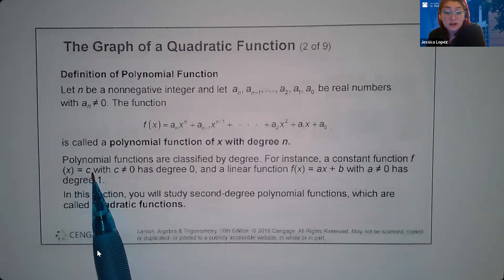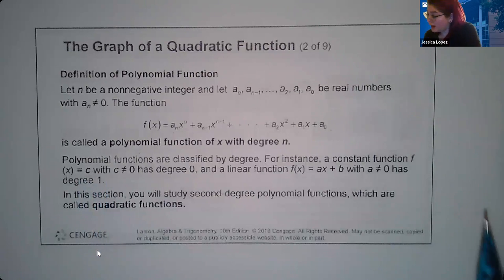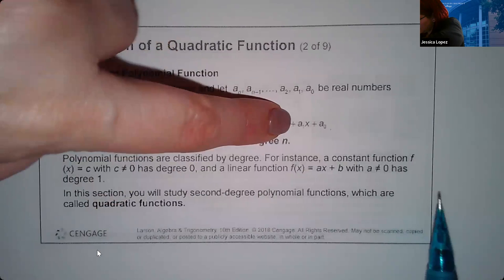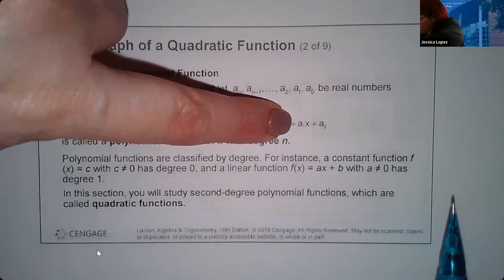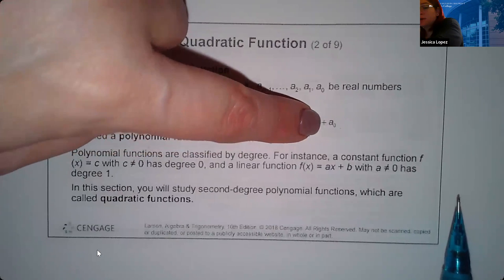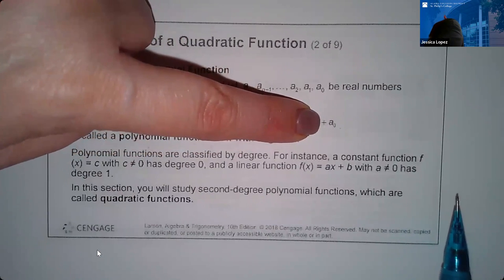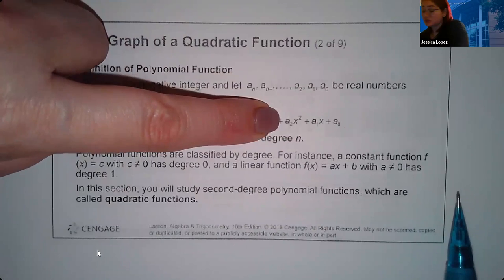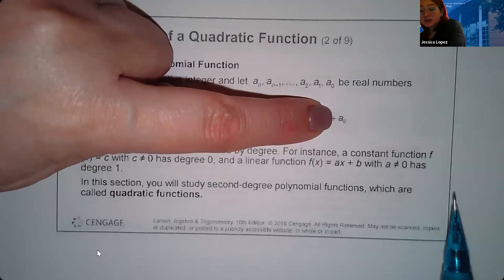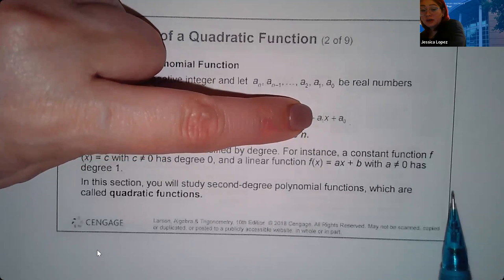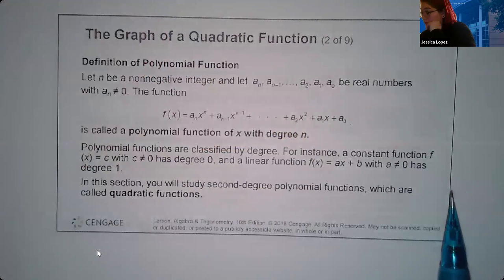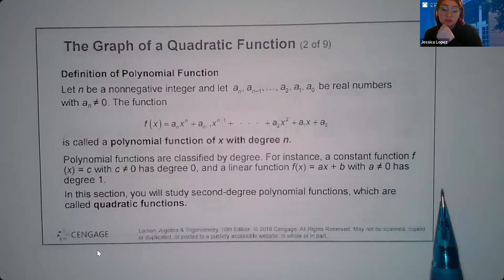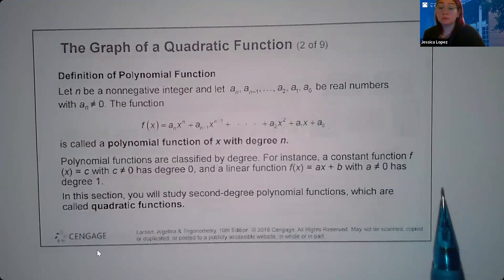Polynomial functions are classified by their degree. If you have a degree of one, you're talking about x to the first power, which is a linear function. If you're talking about x to the zero power, that's a constant function. A function with a degree of two is what we describe as a quadratic function. So degree zero is constant, degree one is linear, degree two is quadratic, degree three is a cubic, and beyond that they're all called polynomials.